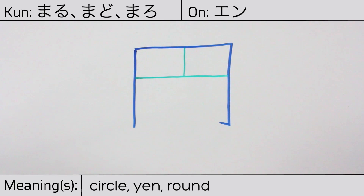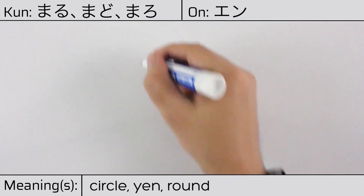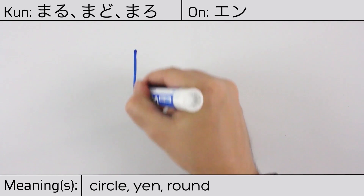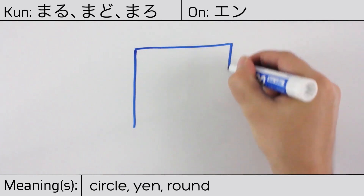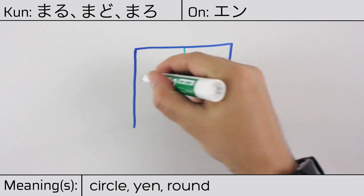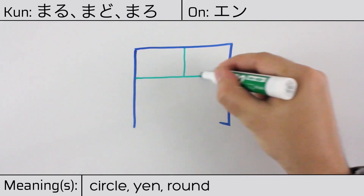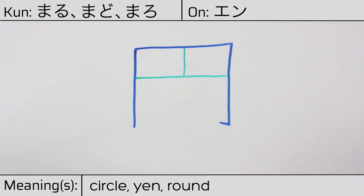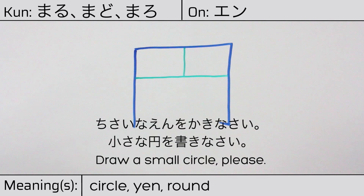You can remember this Kanji by the following hint: Rounded like a dragnet full of fish. Hopefully you can imagine this character as a net. Our example sentence is: Chisana en wo kakinasai. Draw a small circle, please.